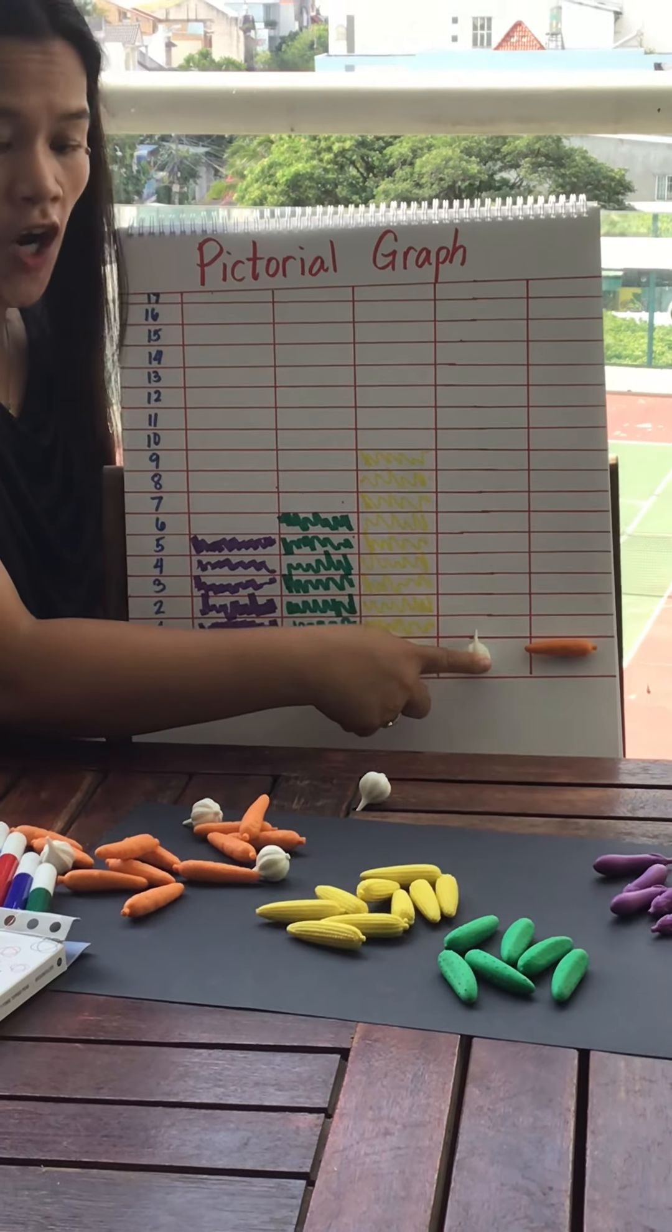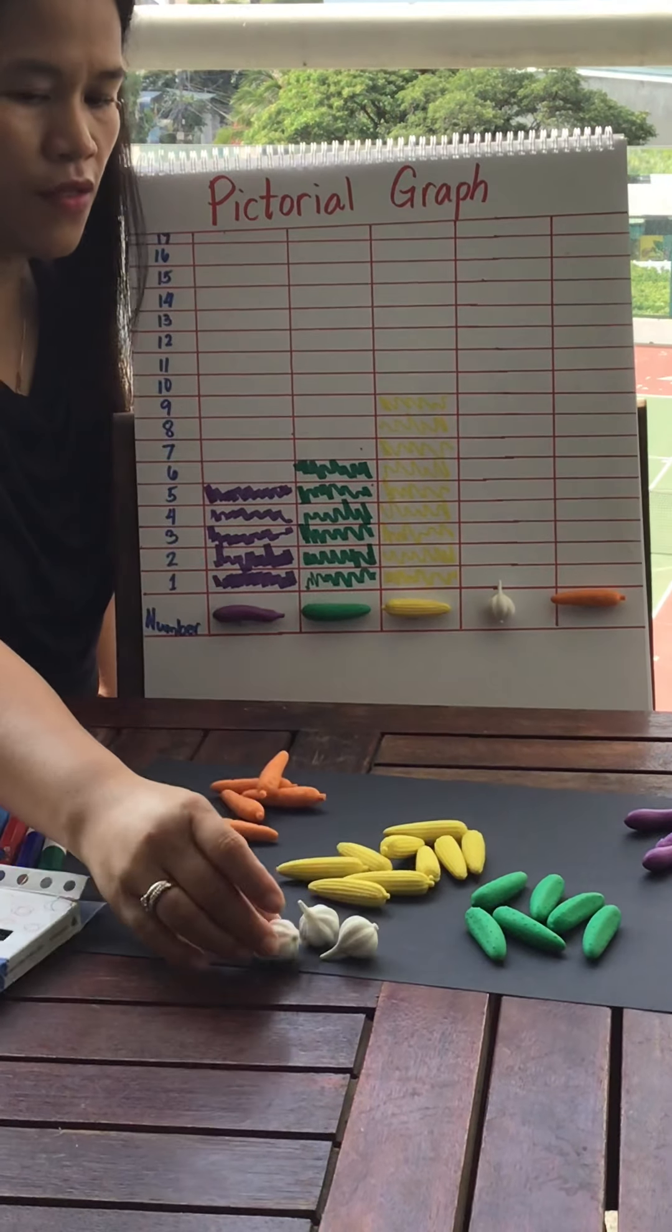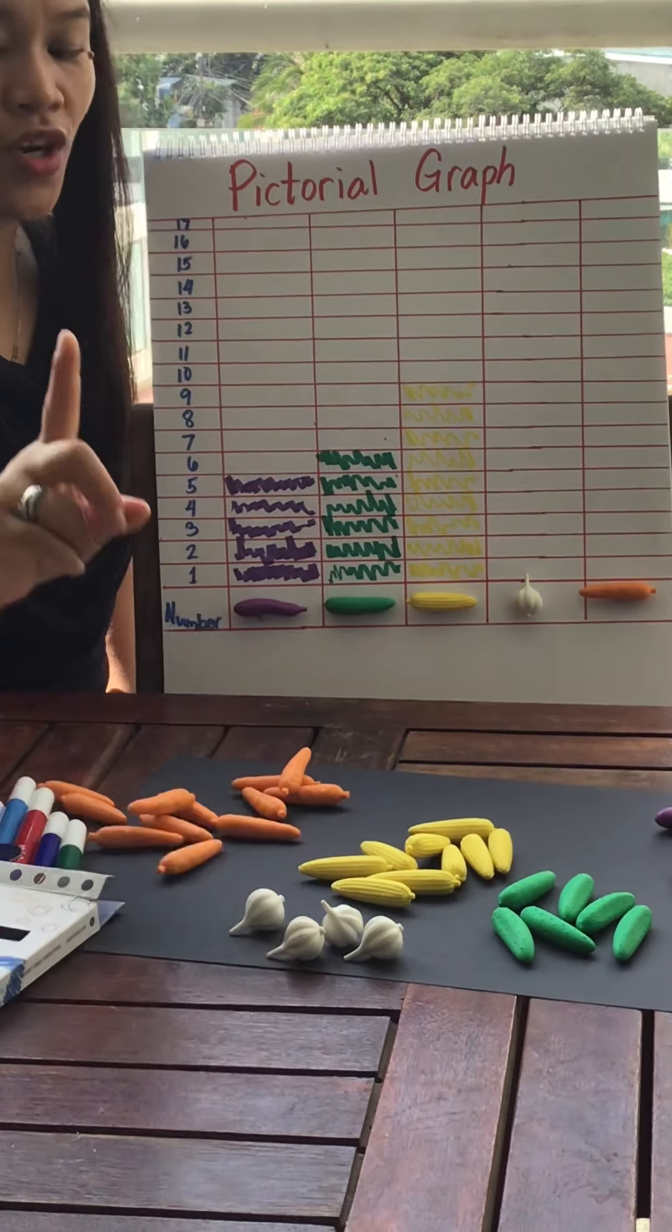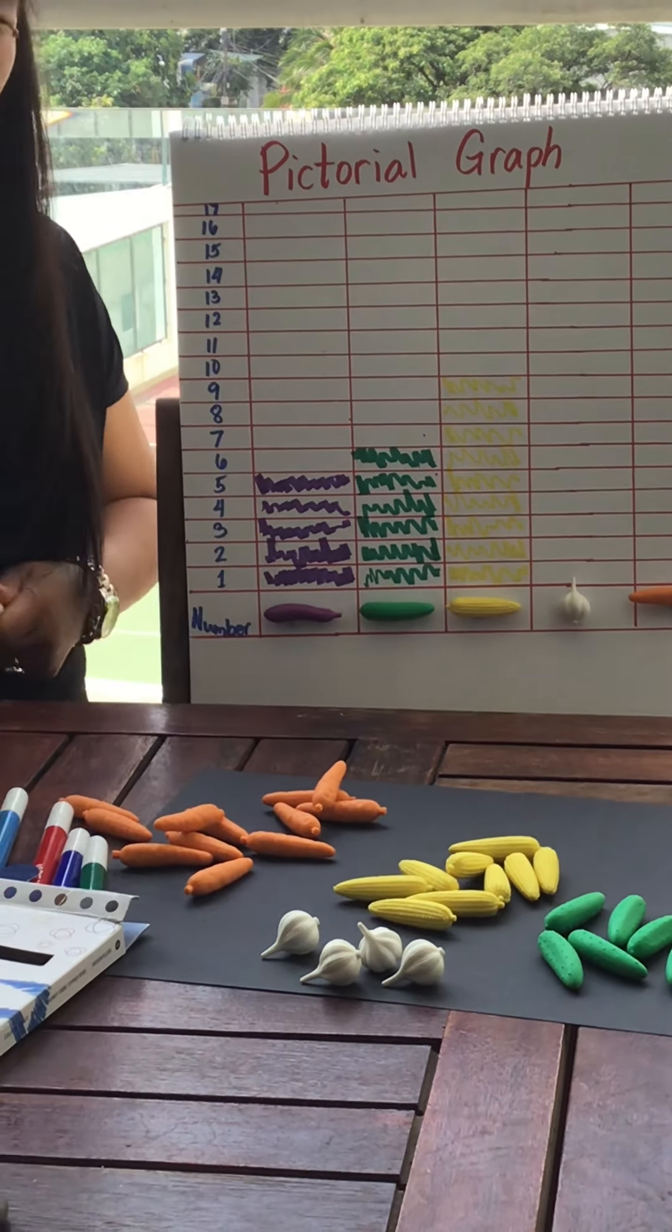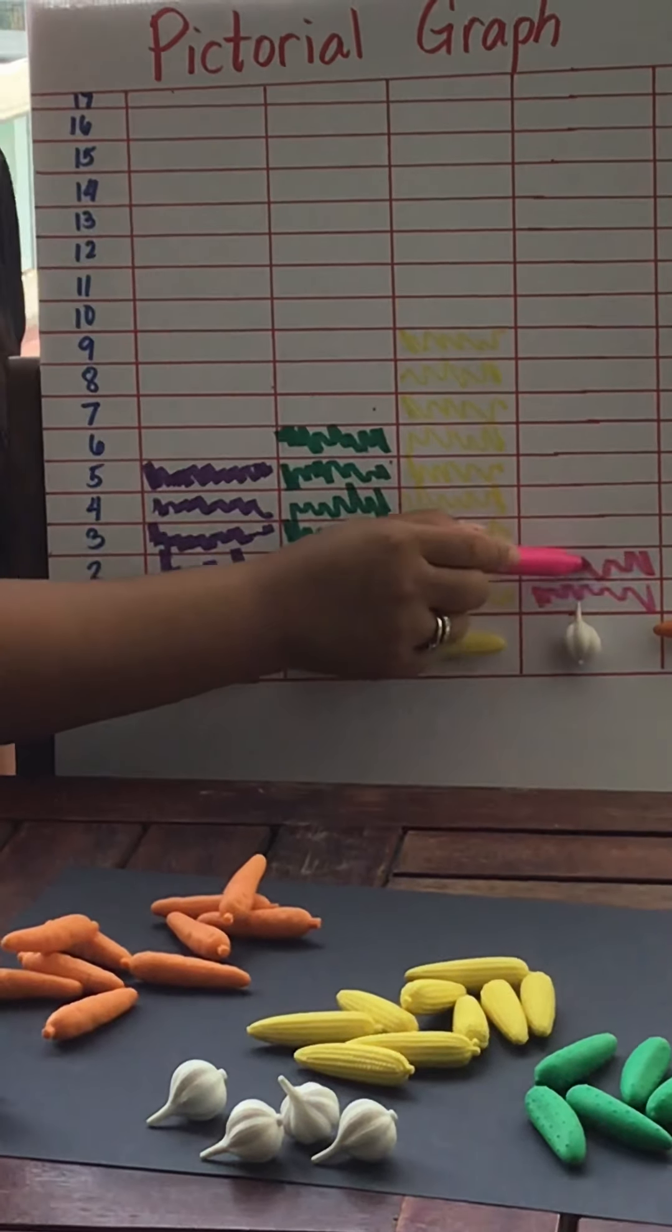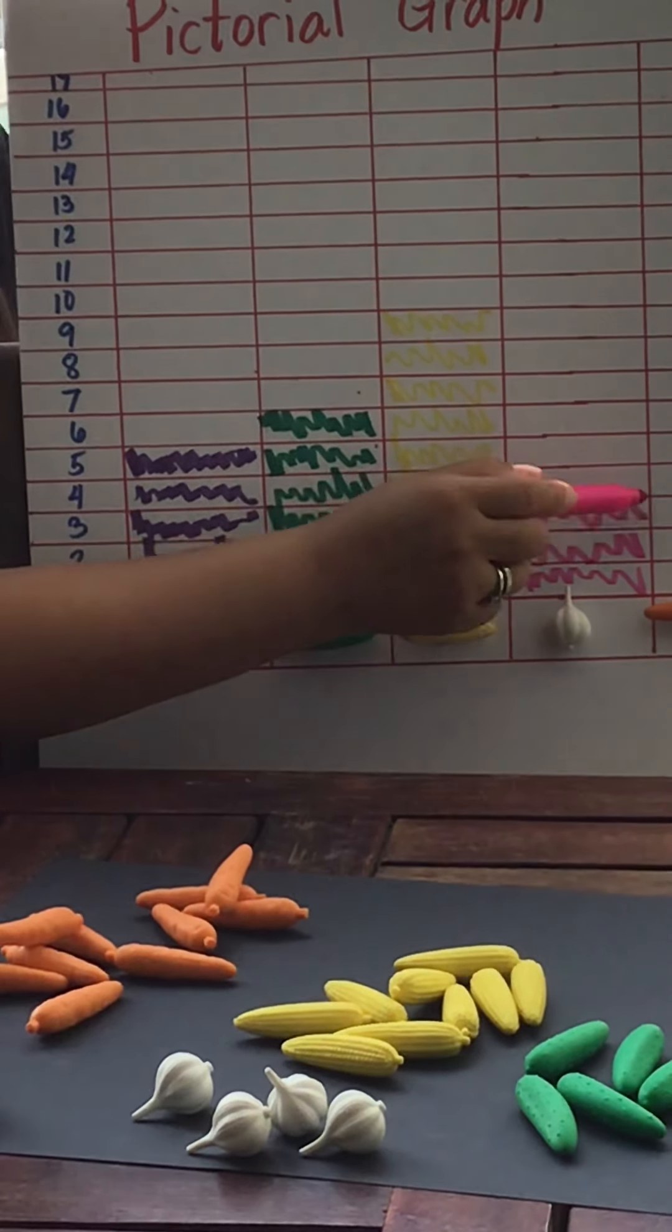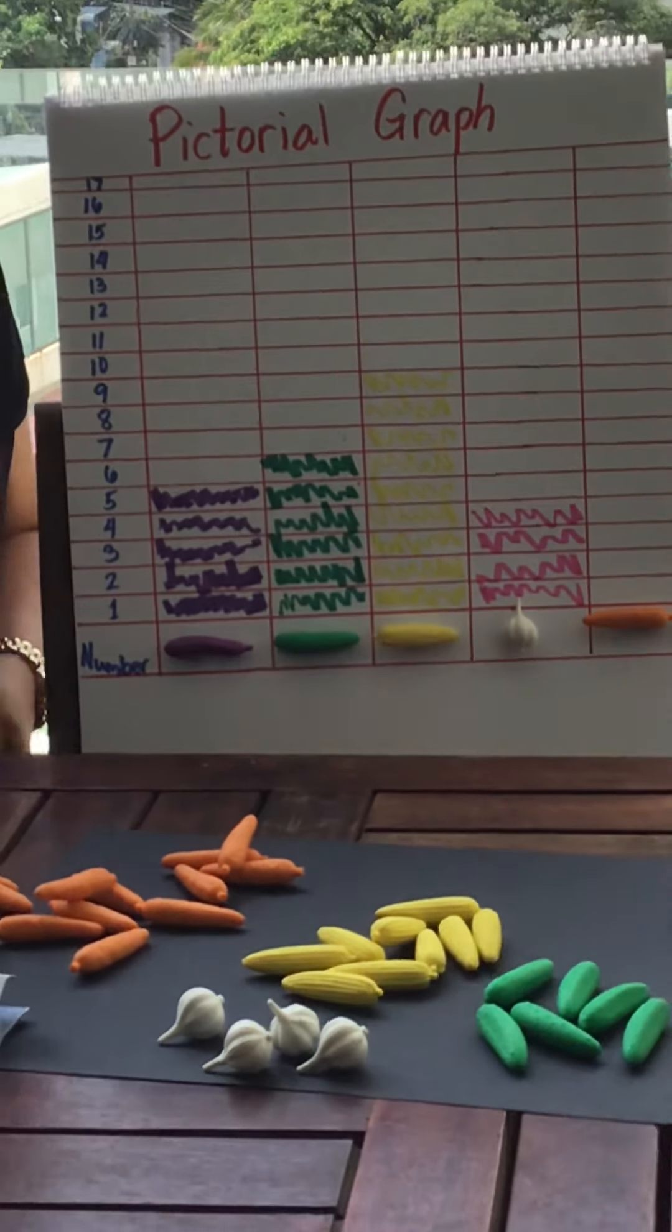Now, let's have the garlic. Let's count the garlic. One, two, three, four garlic. So I am going to use pink for the garlic. One, two, three, four only. There's four for the garlic.